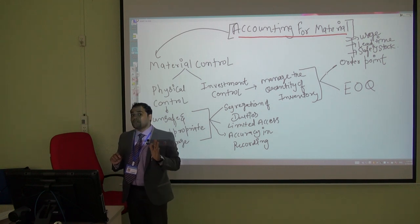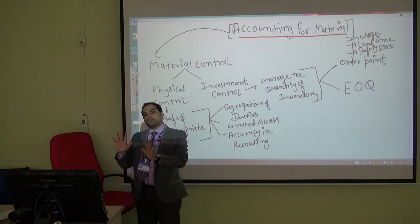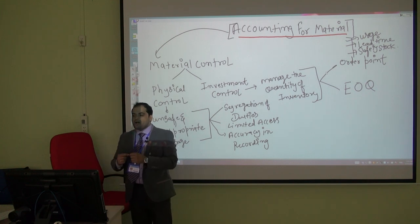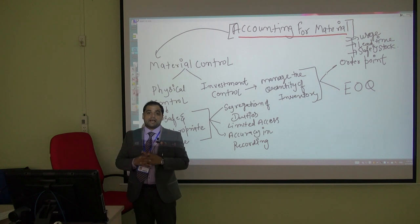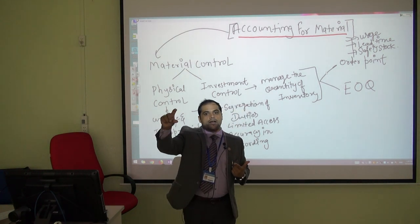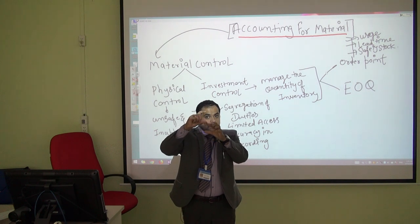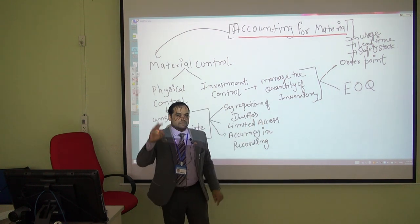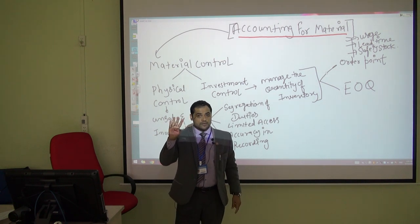So the idea is to keep some backup stock. Instead of exactly three kilograms, I keep four to five kilograms — assuming four to five days — so that if the supplier is delayed by one or two days, I still have material available. The order point formula is: usage multiplied by lead time, plus safety stock. For example, if usage times time equals three kilograms and safety stock is one kilogram, then the order point is four kilograms.